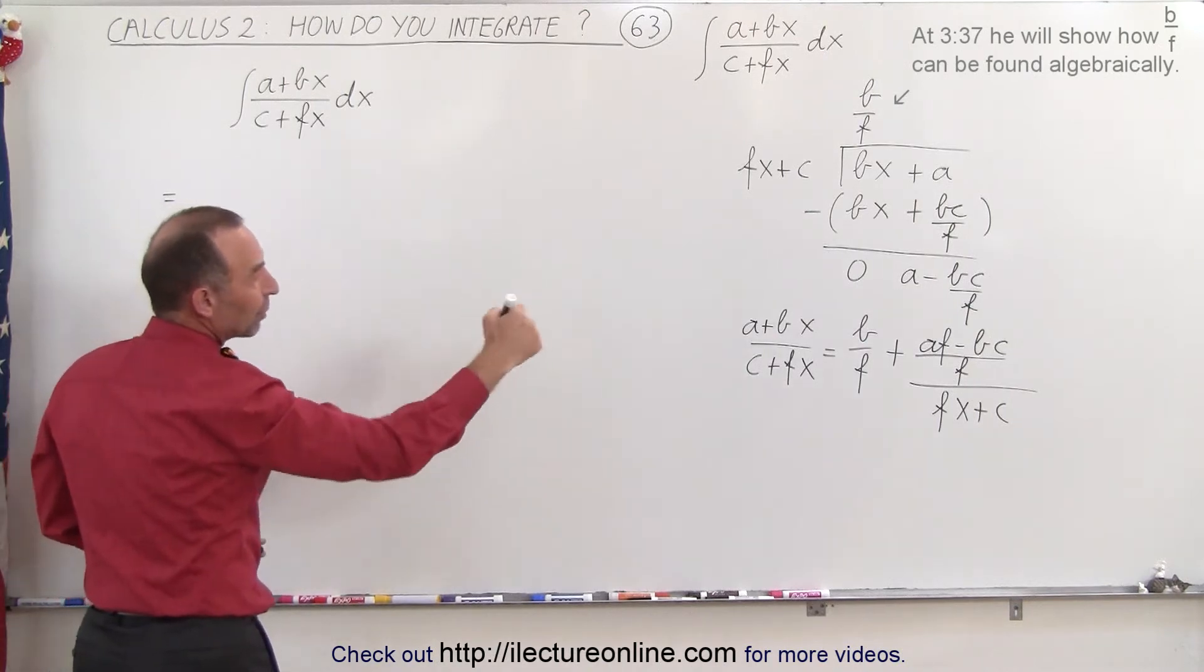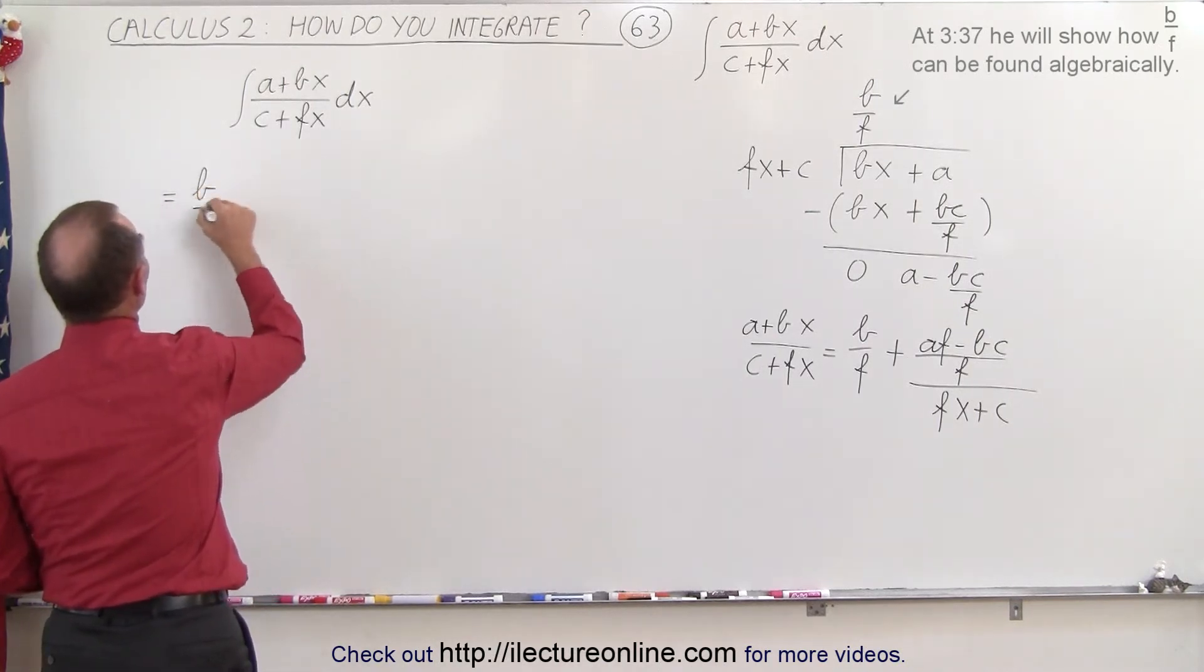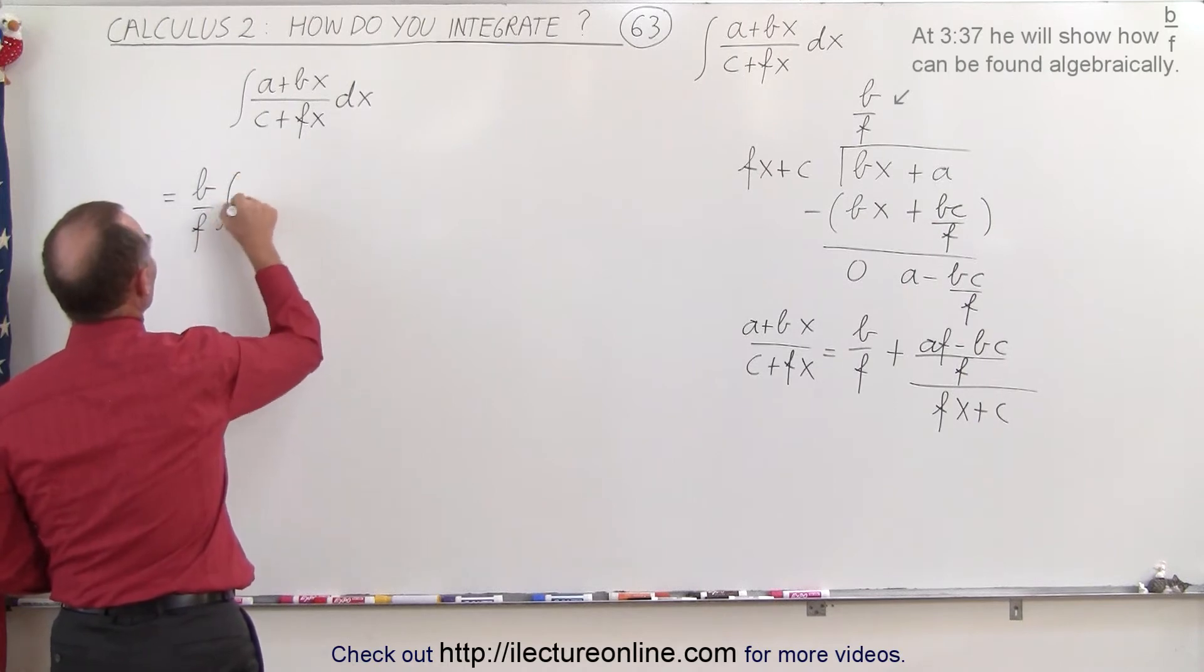Okay, so this is equal to, and since b over f is a constant, we can take outside integral sign, so b over f times the integral of dx,